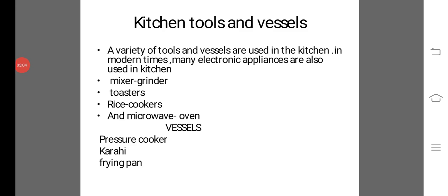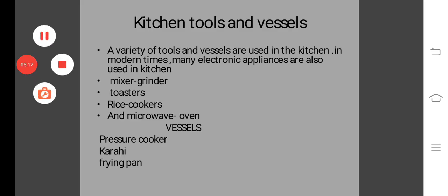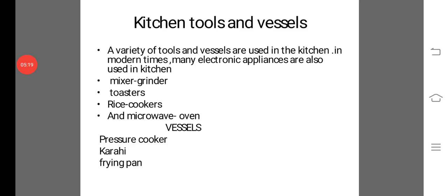Kitchen tools and vessels — a variety of tools and vessels are used in the kitchen. In modern times, many electronic appliances are also used in the kitchen, such as mixer grinders, toasters, rice cookers, and microwave ovens. Common vessels include pressure cookers, curry pans, and frying pans.